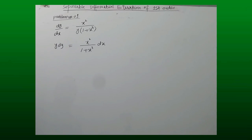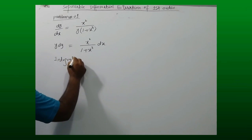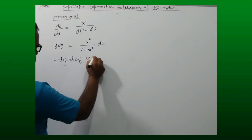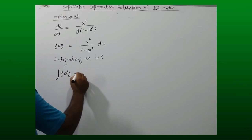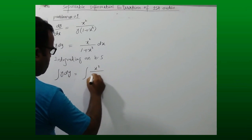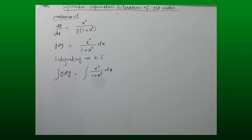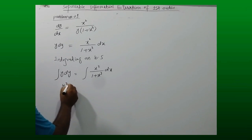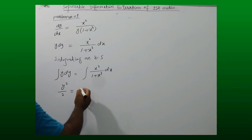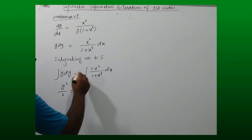In order to find the solution of the differential equation, we will integrate on both sides. Integrating on both sides: y dy is equal to x squared over 1 plus x cubed dx. After integrating, the left-hand side gives y squared over 2.